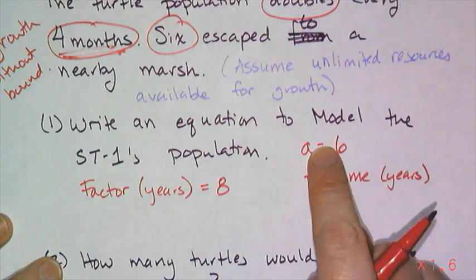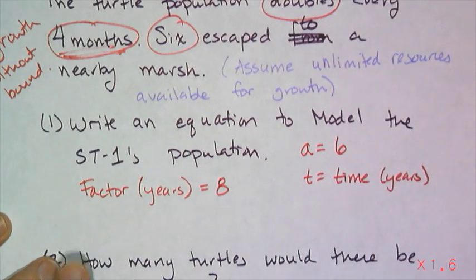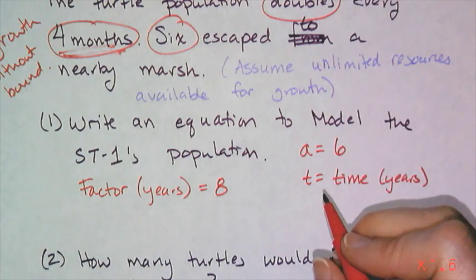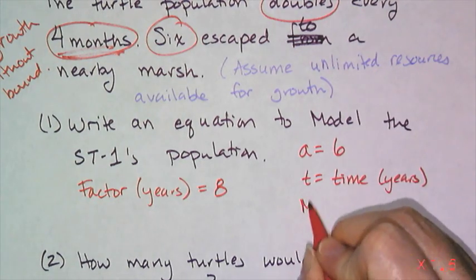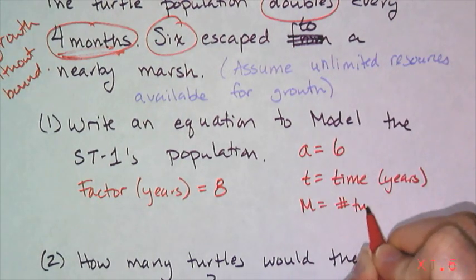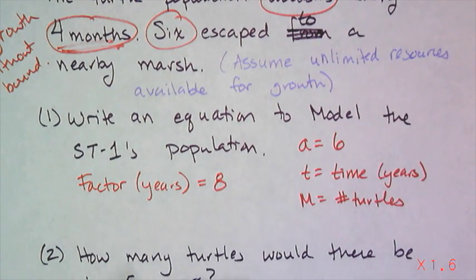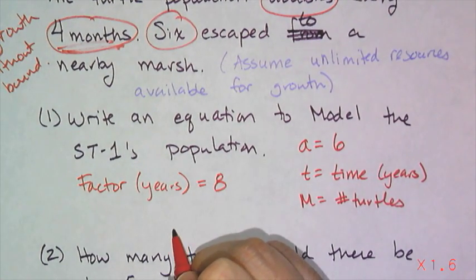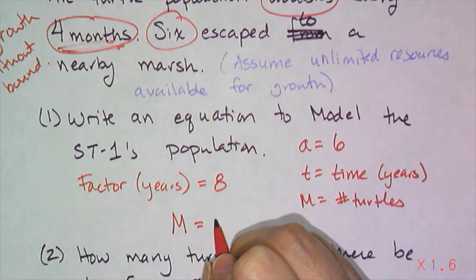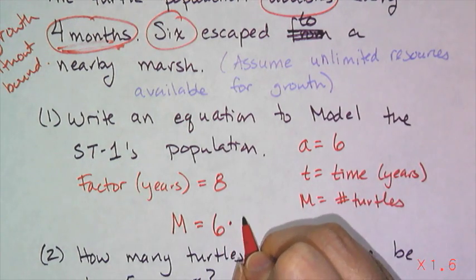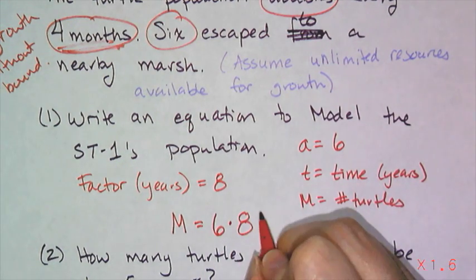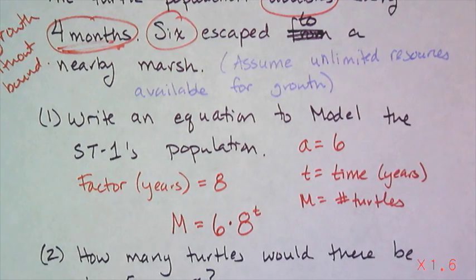So I have my initial value, T is the time in years. This is my factor, and I can just say m is equal to the number of turtles. I have everything I need to write my equation to model the population of the turtle. So I can say m equals the initial value, which is 6, times my multiplier, which is 8, raised to the T.